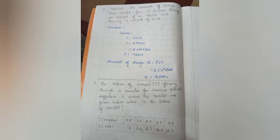The given values are i equals 2.5 ampere and t is 2 hours. 2 hours is converted into seconds, which is 7200 seconds.